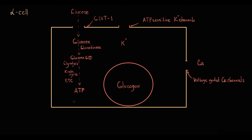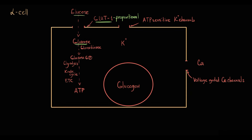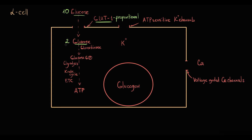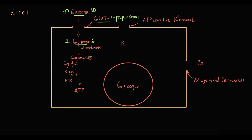This is the most crucial step. The GLUT1 transporter provides transportation of glucose inside the cell in proportionate amounts to the glucose level in the blood. For example, for every 10 glucose molecules in the blood, the GLUT1 transporter transports 2 glucose molecules. And for every 30 glucose molecules in the blood, it transports 6 glucose molecules.